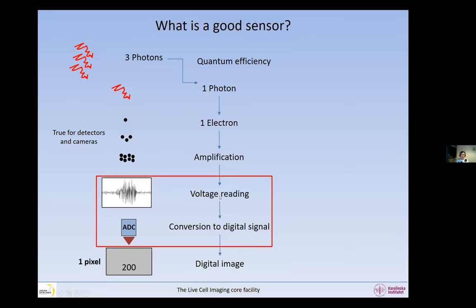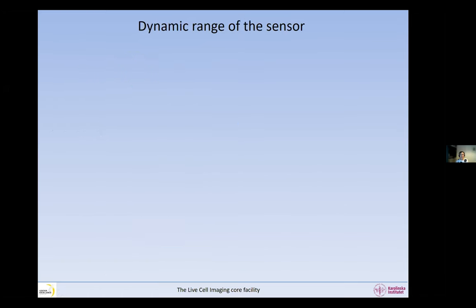We're talking about the dynamic range and bit depth — the way we convert and read the signal. The dynamic range of the sensor is the ability to read dark and bright areas with details and without saturating. We'd like lots of details in dim places and very bright places, and we do not want any saturation or underexposure. Ideally we want a high dynamic range — this is a specification of the sensor, so once you have your sensor, there's not much you can do about it.